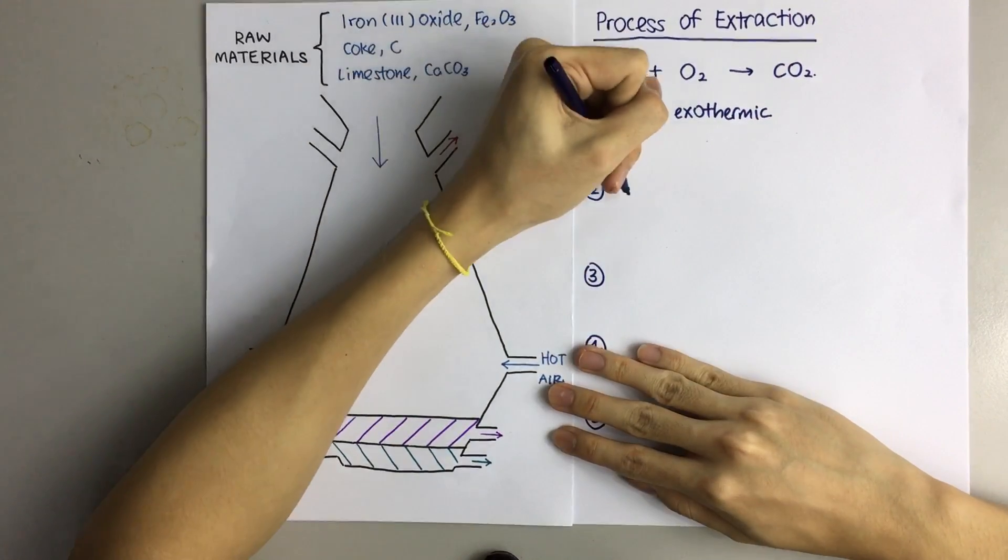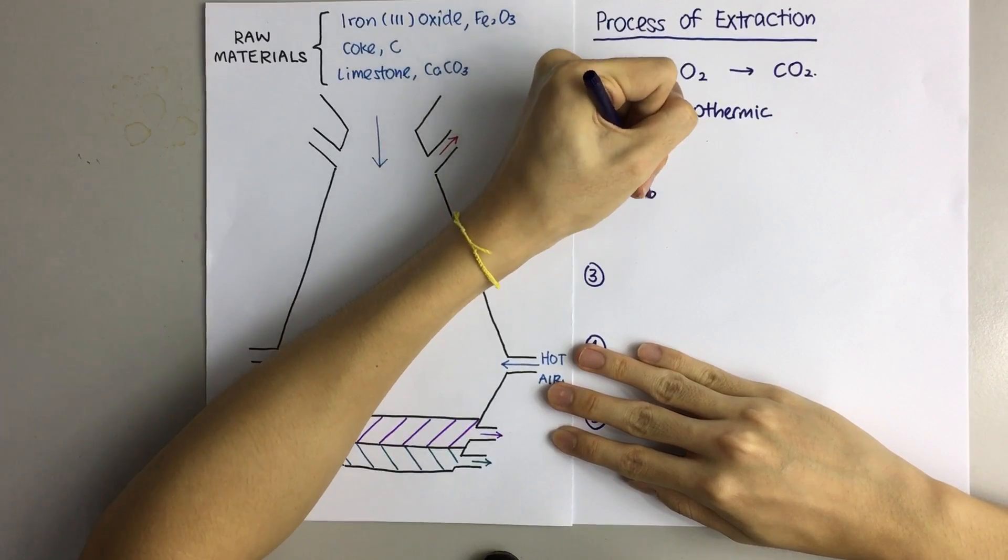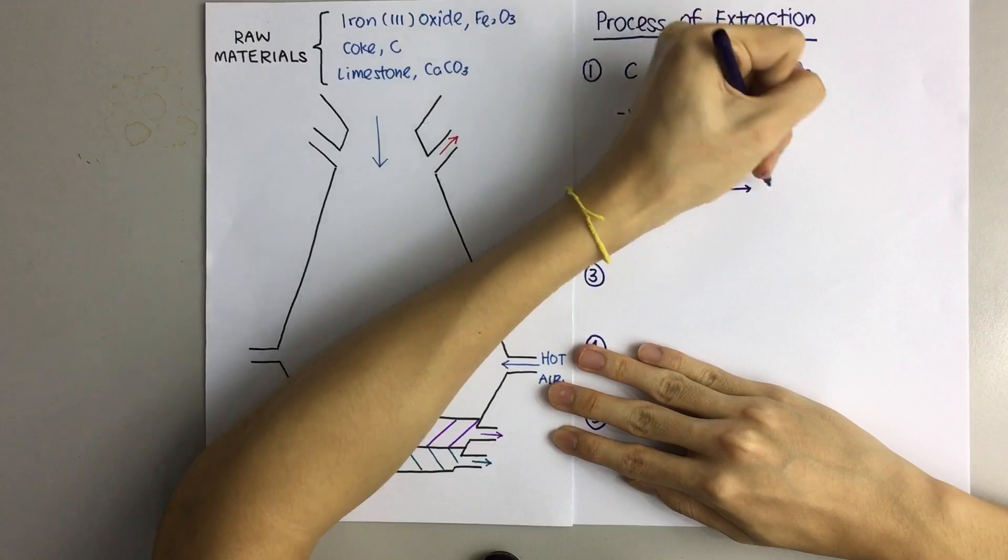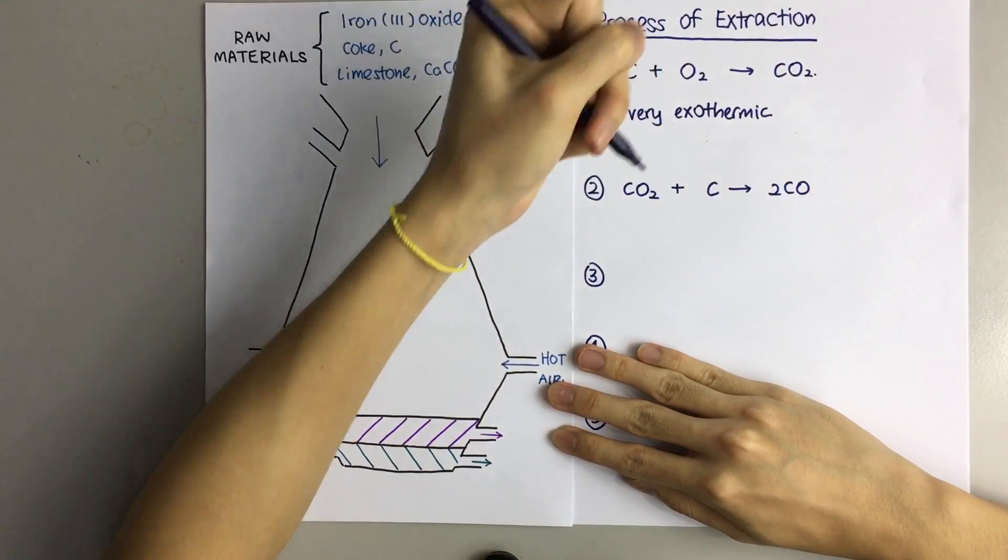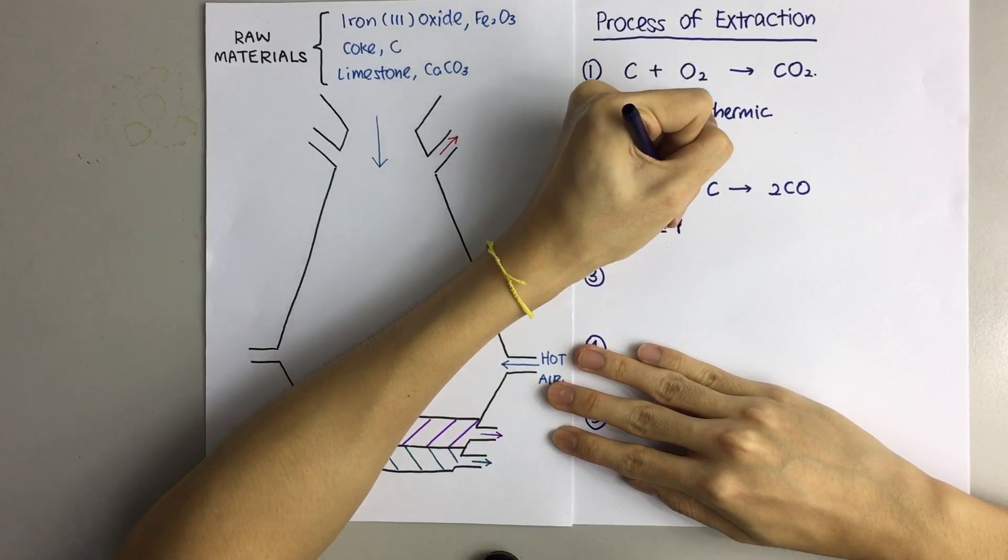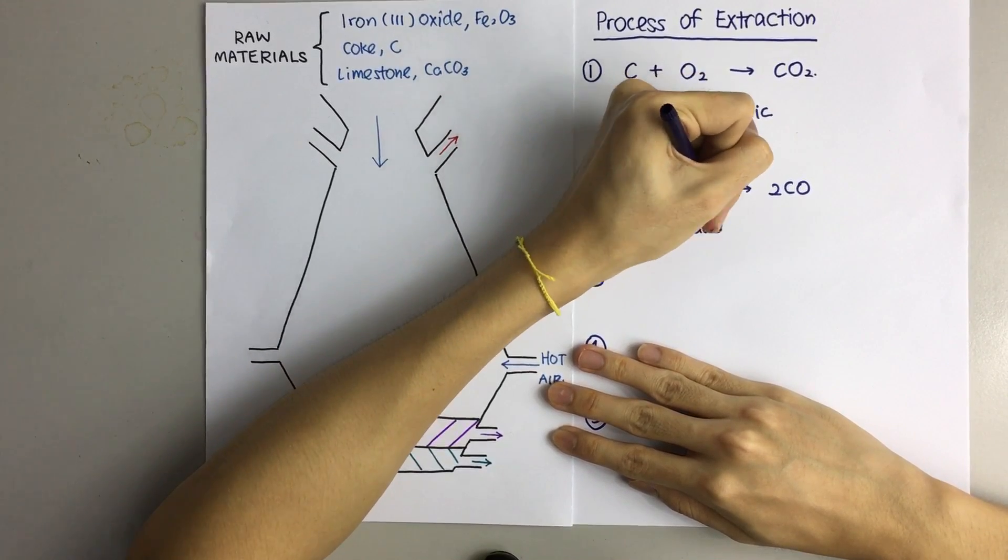Second step, as carbon dioxide gas rises up, it's going to react with more carbon to form carbon monoxide. Carbon monoxide is actually the reducing agent in this reaction.